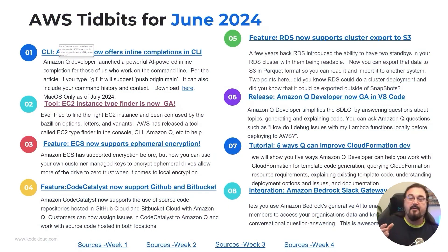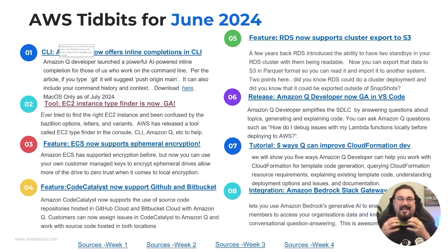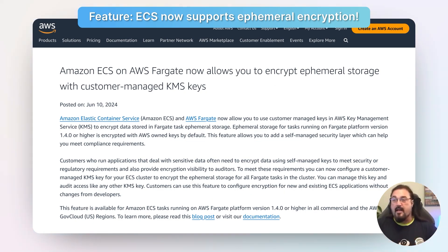Going to number three — ECS, the Elastic Container Service, is one of the best ways to get into containers if you don't want the learning curve of Kubernetes when you're already on AWS. ECS has always supported ephemeral encryption, but it hasn't supported ephemeral encryption for disks with customer managed keys. This is now a feature that's been added as of June — ECS and the Fargate launch type both now support customer managed keys to encrypt their ephemeral storage. A security feature enhancement — that's number three.